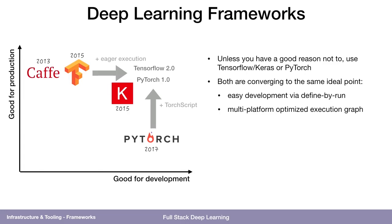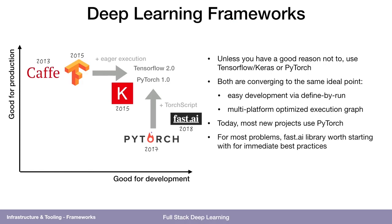With TorchScript, you can write your model in Python and then convert it to TorchScript, which is this optimized execution graph that can run on mobile or constrained resource systems. Today, most new projects start with PyTorch instead of TensorFlow. TensorFlow 2.0 is a recent release, and there's a little bit of an upgrade path — if you upgrade your TensorFlow 1.x models to 2.0, you have to do a little bit of work. So if you're starting a new project, TensorFlow 2.0 makes sense, but most people are now using PyTorch.